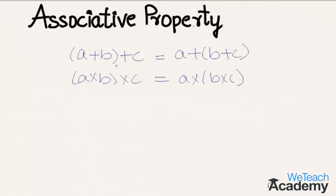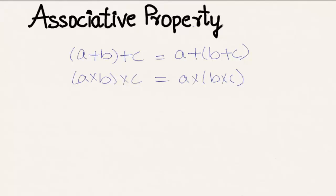In conclusion, associative property states that if we wish to add or multiply two or more numbers, it doesn't matter how we group them and the result will be equal. This was a basic introduction on associative property. Hope you understood the concept. Do like and subscribe to vteachacademy.com. Thanks for watching. Have a nice day.